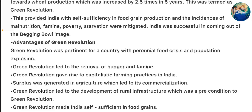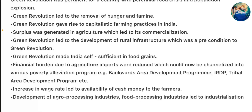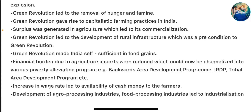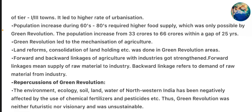Advantages of Green Revolution: Green Revolution was pertinent for a country with perennial food crisis and population explosion. It led to the removal of hunger and famine and gave rise to capitalistic farming practices in India. Surplus was generated in agriculture which led to its commercialization. Green Revolution led to the development of rural infrastructure, which was a precondition to Green Revolution. It made India self-sufficient in food grains. The financial burden due to agriculture imports were reduced, which could now be channelized into various poverty alleviation programs such as IRDP, backward area development programs, tribal area development programs, etc. Increase in wage rates led to availability of cash to farmers. Development of agro-processing and food processing industries led to industrialization of tier 1 and tier 3 towns, and higher rates of urbanization.